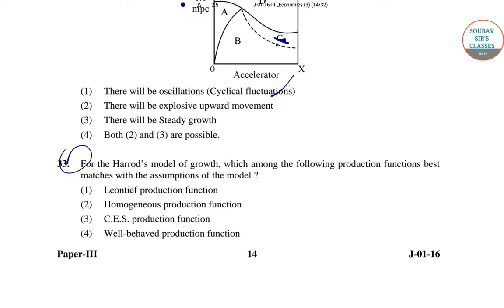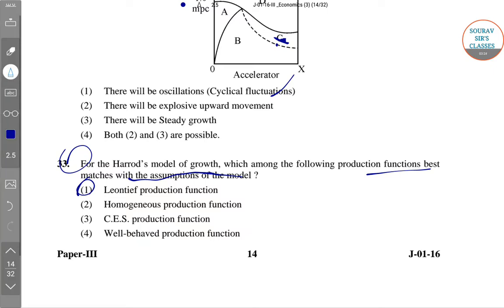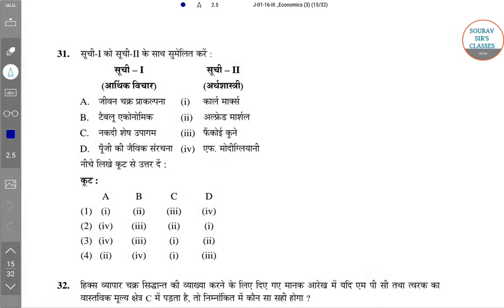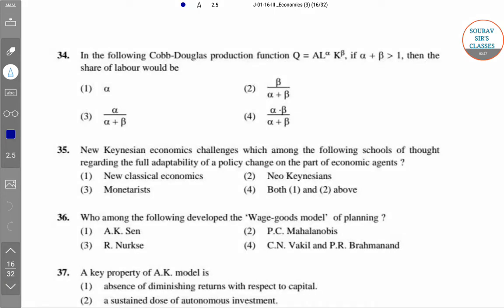Question 33: Which production function best matches the assumptions of Harrod's model of growth? The right answer is option 1, that is the Leontief production function.